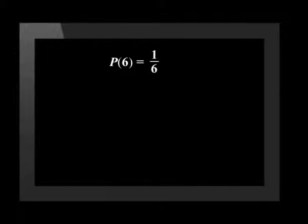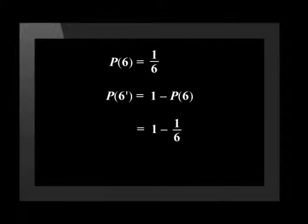For example, the probability of getting 6 on a dice is 1 over 6. Therefore, the probability of not getting 6 is 1 minus 1 sixth, which gives us 5 over 6.